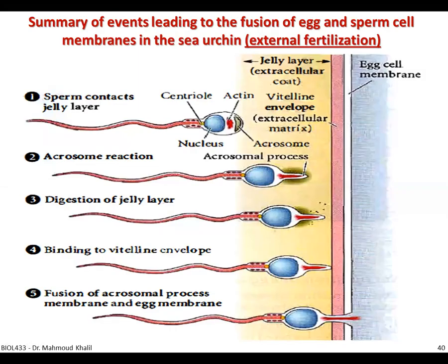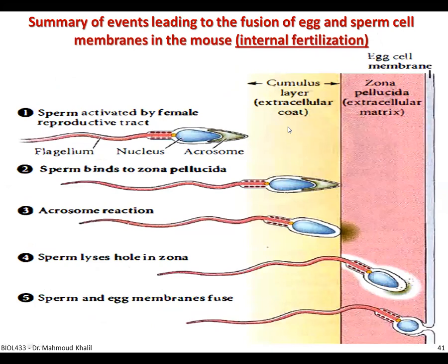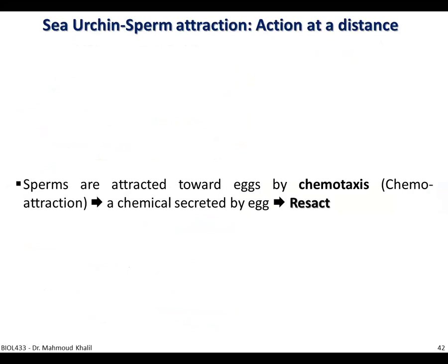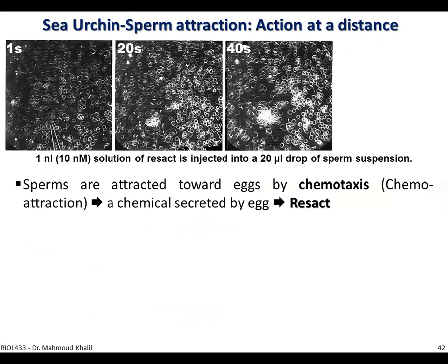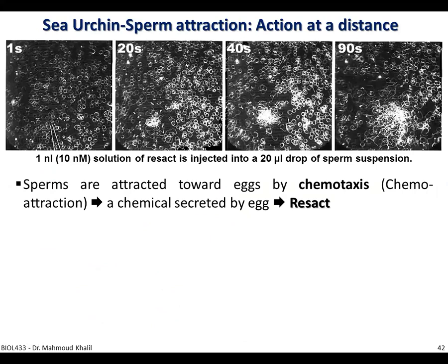In the last lecture, we discussed the events that occur during fertilization for sperm and egg in the case of external fertilization, then how these events differ in internal fertilization as in mammals. We also discussed an experiment showing how sperm is attracted toward the egg by chemotaxis, in which a chemical called resact is secreted from the egg to direct the sperm toward it.